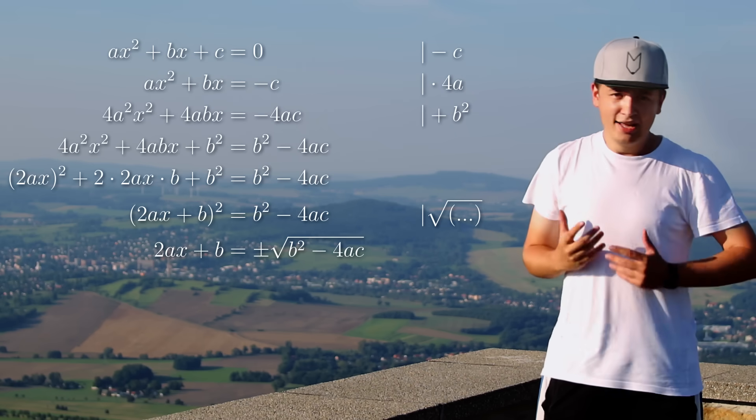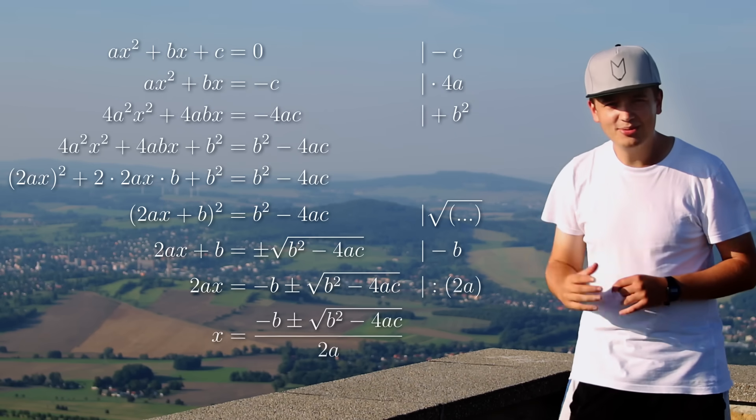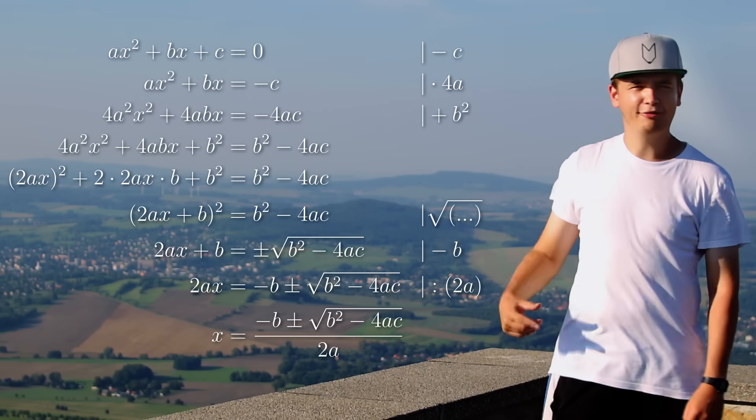And if you look to the left side, you know what will be next. Subtraction of b and division by 2a is giving us a formula for x.